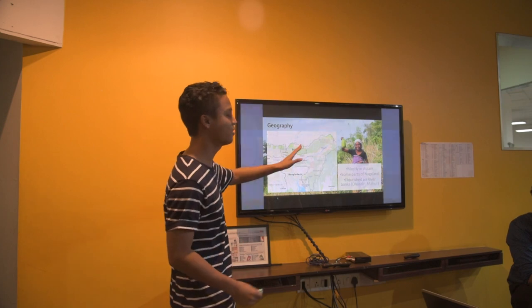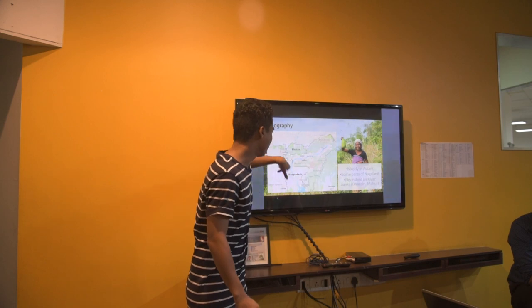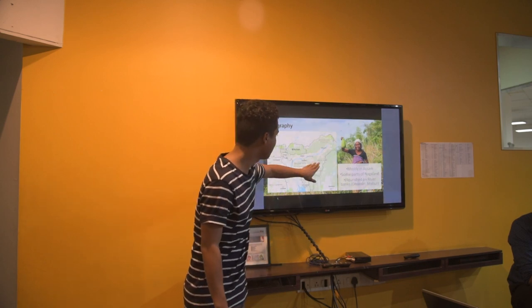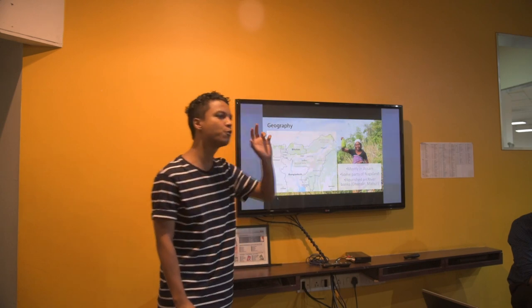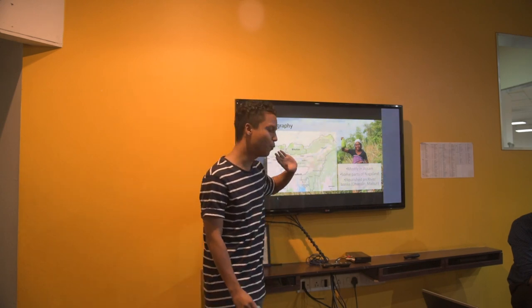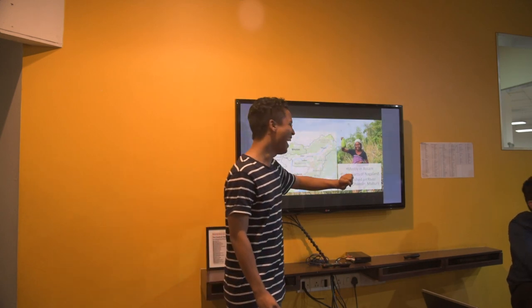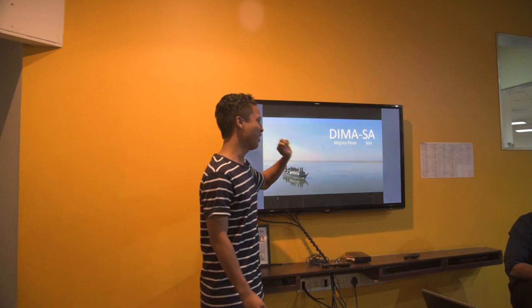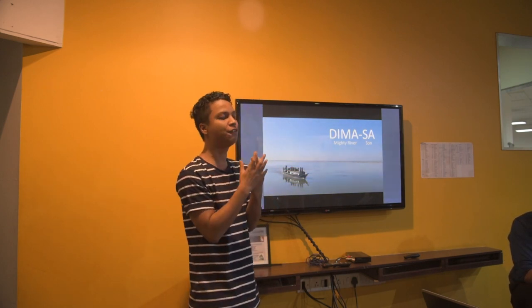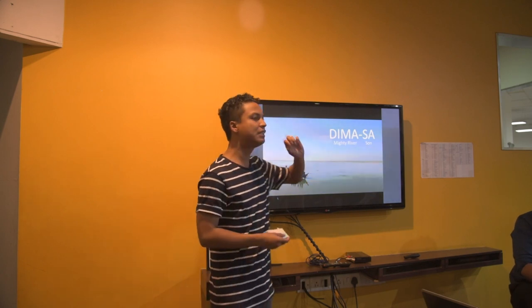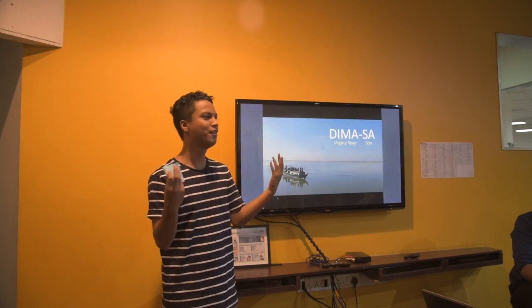These are not my pictures. All the rest are my pictures. This is the map of Northeast and this is Assam. This is where most of us live, the Dimasas. Our cultures and our kingdoms have mostly flourished on river banks. That is why we are called Dimasas. Dima means mighty river and Sa means son. Dima-sa.